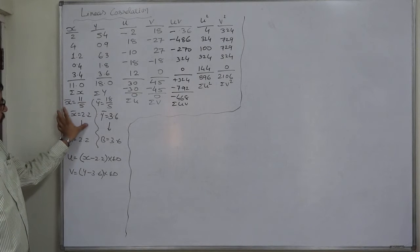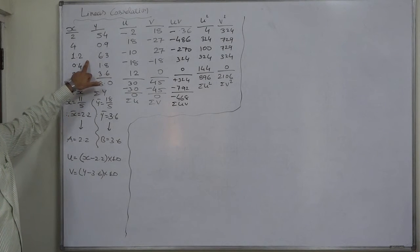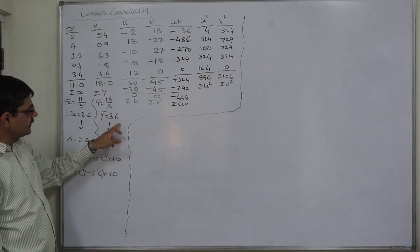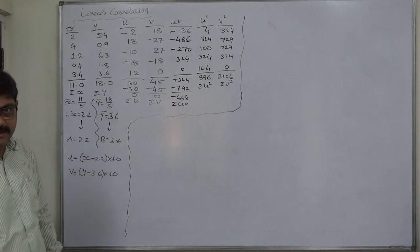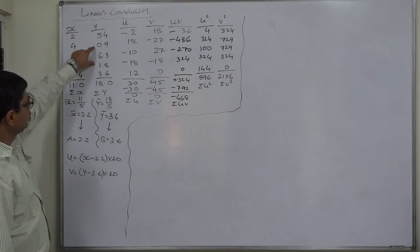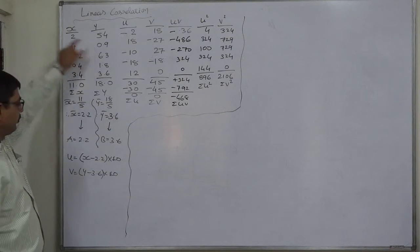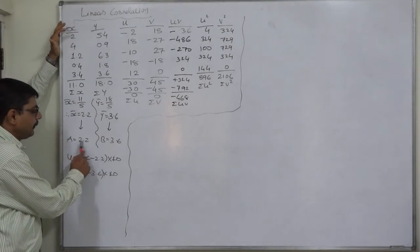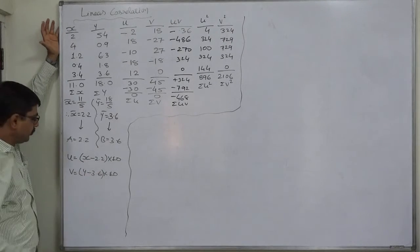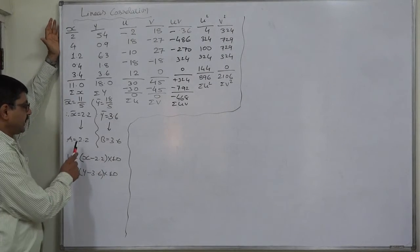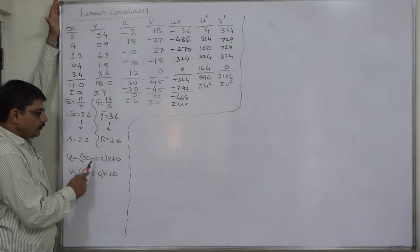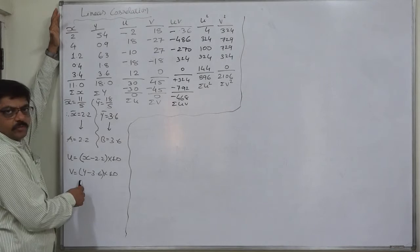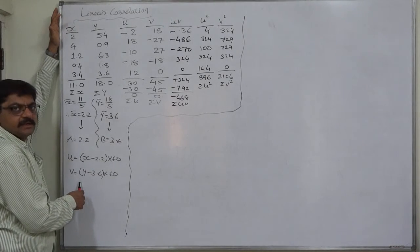In case of x, the mean is 2.2, which is directly matching with the original values with one decimal value. Similarly, y bar is 3.6. So we are going to use the arithmetic means as our assumed means. We will subtract 2.2 from all values of x as a change of origin, and we will subtract 3.6 from all values of variable y as change of origin.